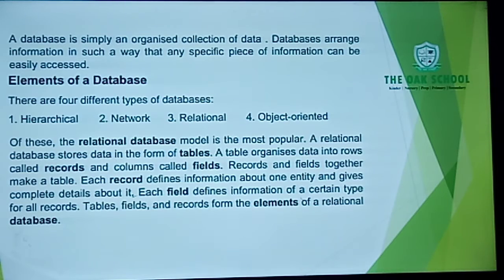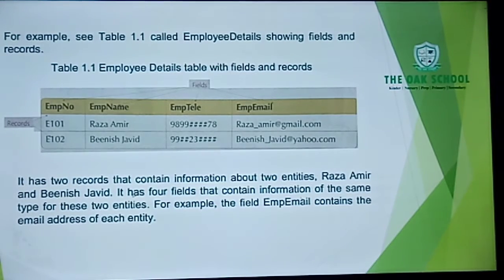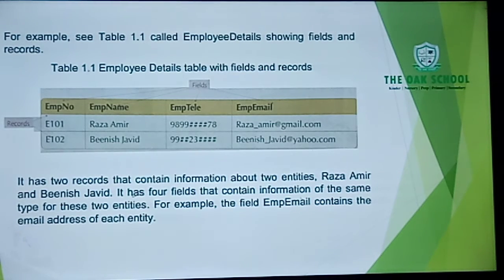We have four elements of our relational database, and we have learned that the relational database is the most popular. For example, see Table 1.14 — Employee Details — showing fields and records. Here we have a picture and we will give the example of how to explain: Employee Number, Employee Name, Employee Telephone Number, and Employee Email.